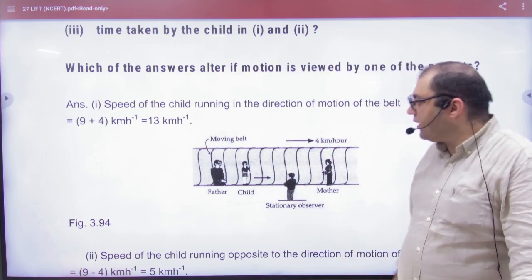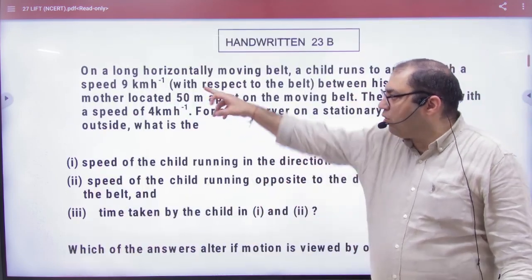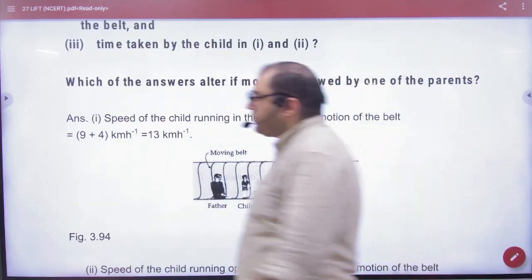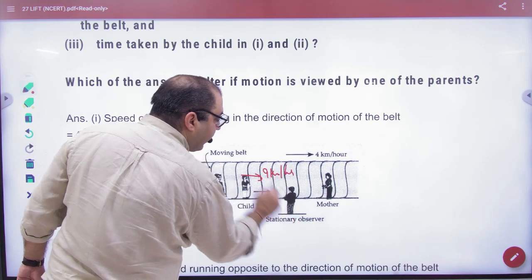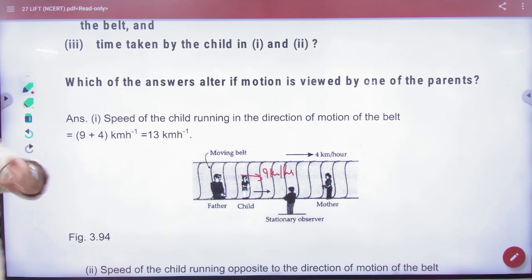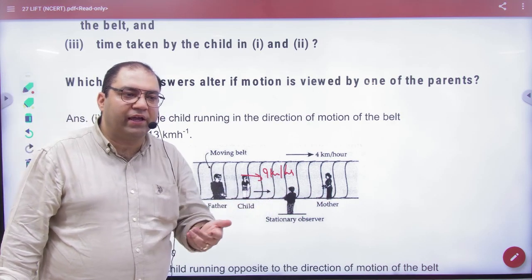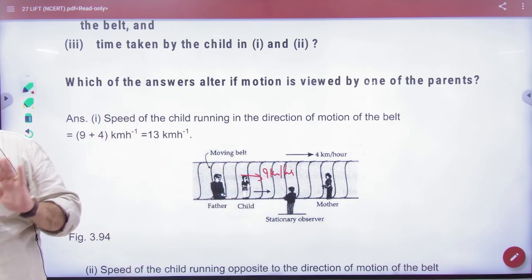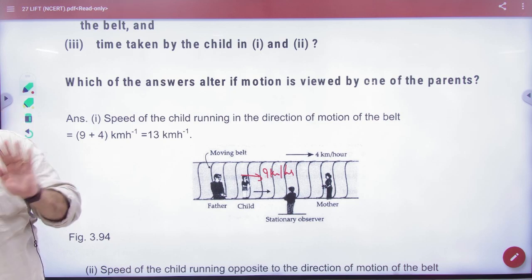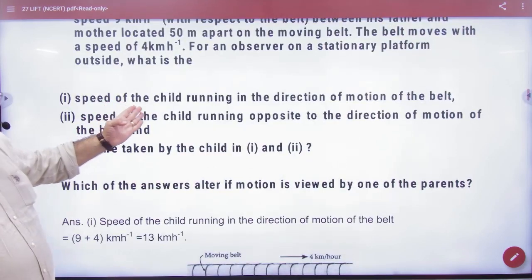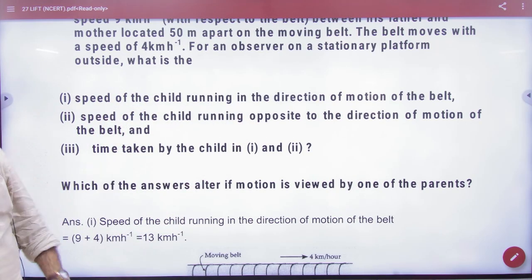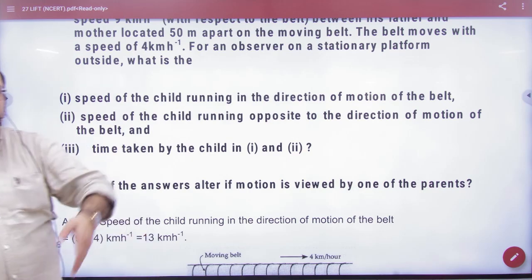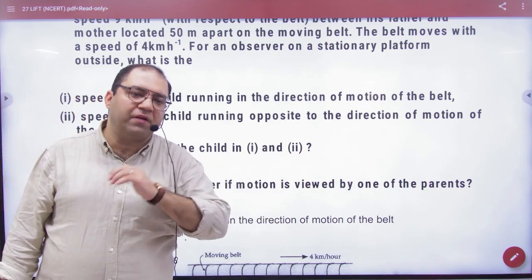So my first question: if this child's speed is 9, that is the speed of the child in the direction of motion of the belt, and the speed of the child opposite to the direction of motion of the belt. Two questions. The third: time taken by the child in cases one and two. When he comes from father to mother, he comes from mother to father.